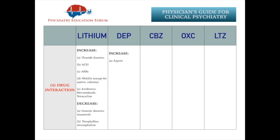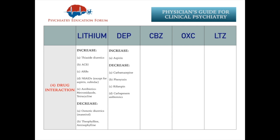Next are medications likely to reduce or decrease Depakote level. The first well-known medication is carbamazepine, which we all know is a pan-inducer and can reduce many medications' levels getting metabolized through the cytochrome P450 system. Similarly, phenytoin and rifampin carry the risk. Among antibiotics, carbapenem antibiotics, and more importantly, estrogen-containing hormonal contraceptives can reduce Depakote level, and they can also reduce lamotrigine level.